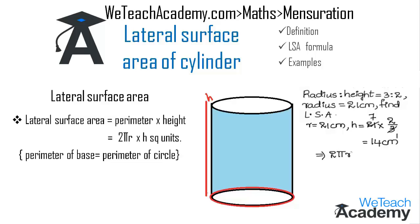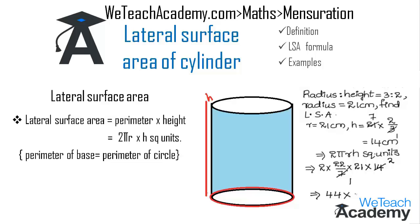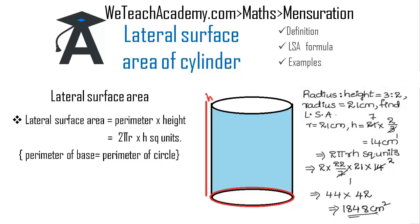We have to find the lateral surface area, given by the formula 2πrh square units. Substituting the values: 2 × (22/7) × 21 × 14. Simplifying, 7 cancels with 14 leaving 2, and 7 cancels with 21 leaving 3. Multiplying: 2 × 22 = 44, and 44 × 42 = 1848. The lateral surface area of the cylinder is 1848 cm².